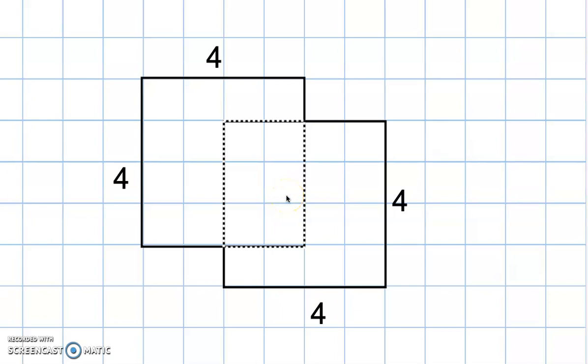What we're going to do is decompose this figure into two figures. So there is a square here, and it's 4 by 4, and then there's another square here, which is 4 by 4.